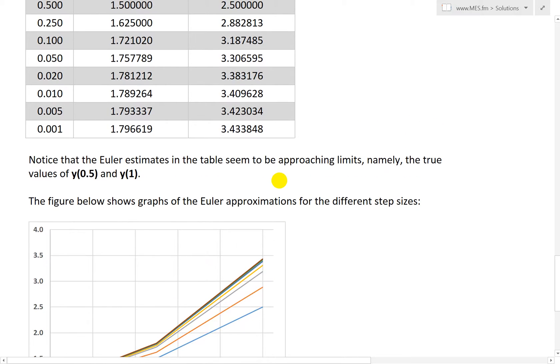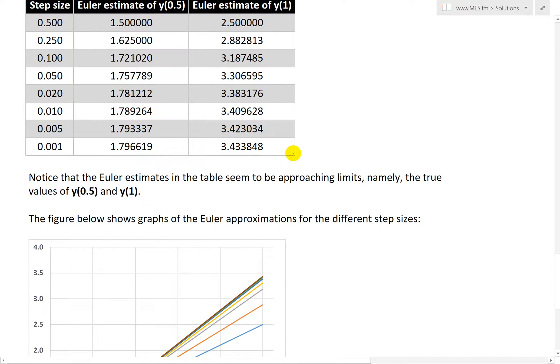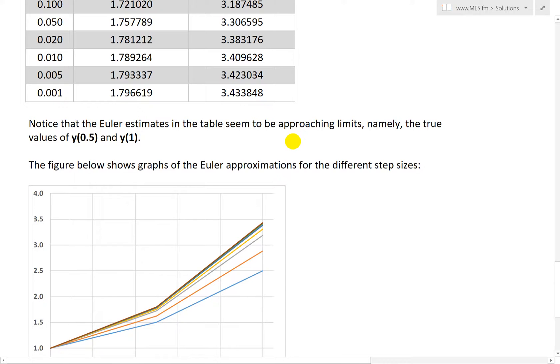So I notice that the Euler estimates, again, in the table seem to be approaching a limit, namely the true values of Y of 0.5 and Y of 1. As you can see here, initially it's 1.5, 1.6, and it's quickly going to 1.7, and then as you can see, when we get 0.005 step size, 1.79, or 3.42 here. And then basically, as you can see, it's getting closer and closer to an exact value. And here, you can say that at least to 1.79, it should be accurate to it. And here, maybe 3.43, and then the other decimal places basically are less accurate, but as you can see, it's getting closer and closer to an exact value.